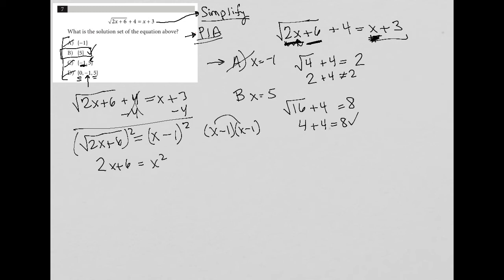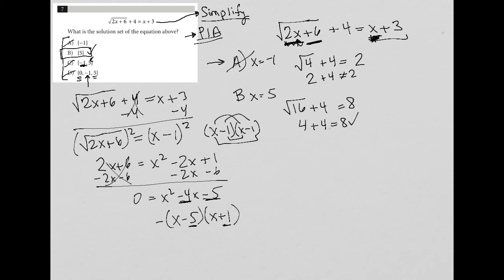Leaving me with 2x plus 6 is equal to—I'd have to FOIL this x minus 1. So first times first, I'd have x squared. Outer times outer plus inner times inner will give me negative 2x. And then last times last gives me positive 1. I then have to combine these like terms here. So I'd have 0 equals x squared minus 4x minus 5. And now I have a trinomial that can be simplified into x minus 5 times x plus 1, because negative 5 times positive 1 equals negative 5, and negative 5 plus 1 equals negative 4.